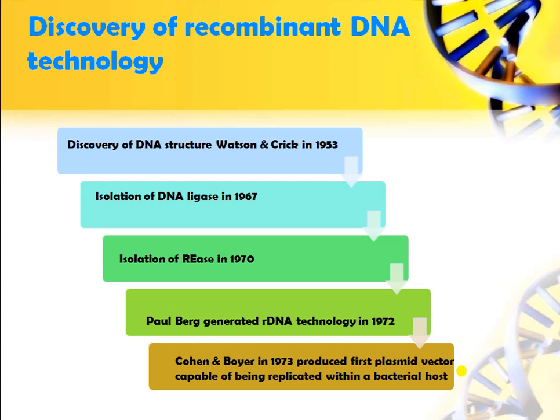The discovery of rDNA technology: the DNA structure was discovered by Watson and Crick in 1953. Then isolation of DNA ligase in 1967, isolation of restriction endonucleases in 1970, then in 1972 Paul Burke generated rDNA technology, and in 1973 Cohen and Boyer produced the first plasmid vector capable of being replicated within bacterial hosts.